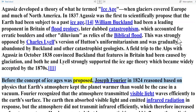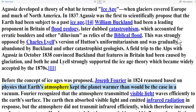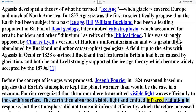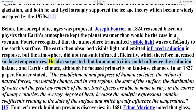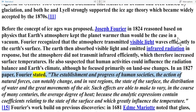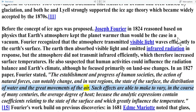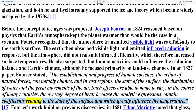Before the concept of ice ages was proposed, Joseph Fourier in 1824 reasoned, based on physics, that Earth's atmosphere kept the planet warmer than would be the case in a vacuum. Fourier recognized that the atmosphere transmitted visible light waves efficiently to Earth's surface, which then emitted infrared radiation in response, but the atmosphere did not transmit infrared efficiently, which therefore increased surface temperatures. He also suspected that human activities could influence the radiation balance and Earth's climate, and in an 1827 paper stated that the action of natural forces and human societies can notably change the state of the surface, the distribution of water, and the great movements of the air.